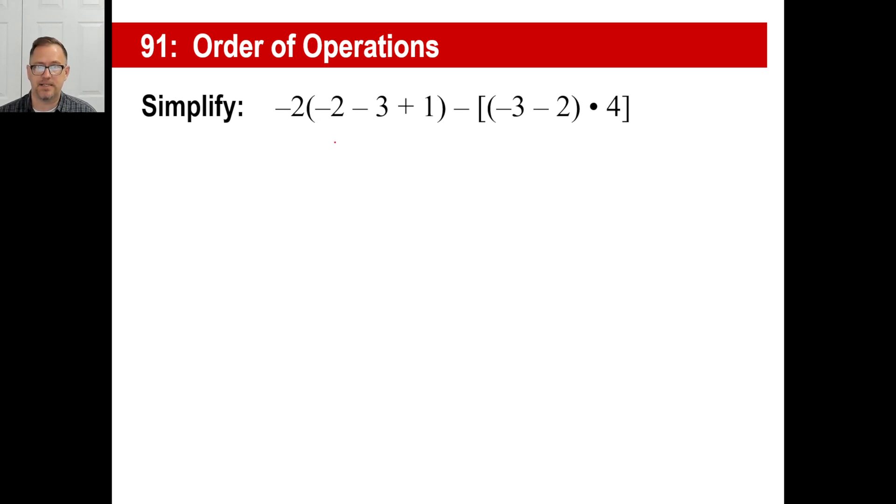Just to make this easier on yourself, just do parentheses first, okay? And that's the correct order anyway. So I'd go ahead and do something like this. I'd go negative 3 minus 2. That's going to be negative 5 plus 1 is negative 4. Then subtract. And then if you want to do this, just keep your bracket there. Let's just go these parentheses first. Negative 5 will be the answer to this, and then times 4, you can end your bracket.